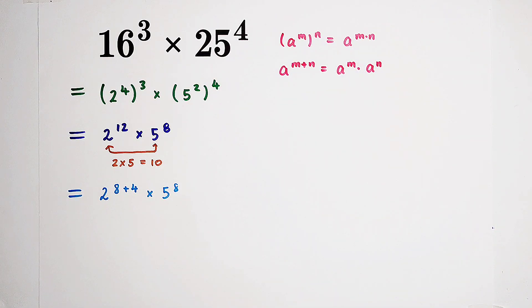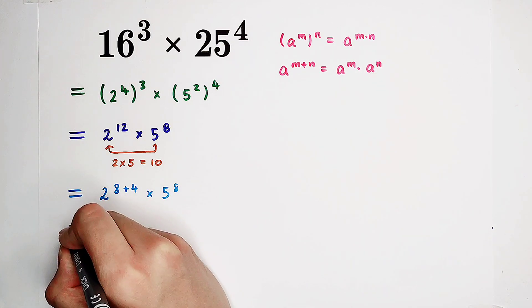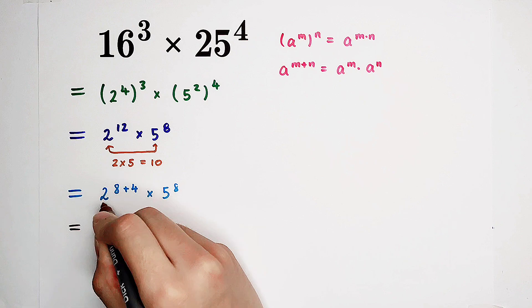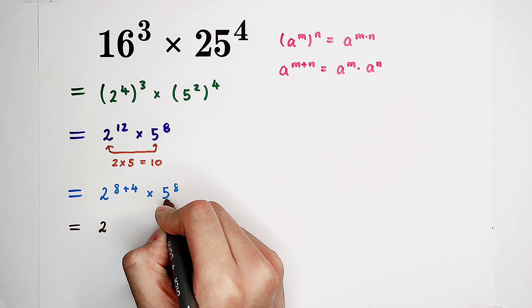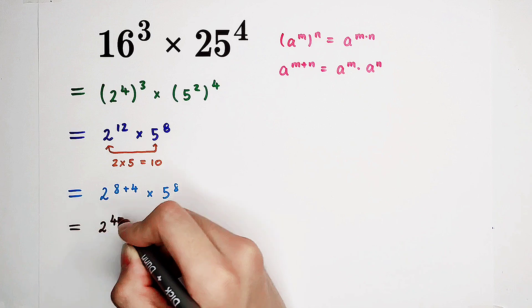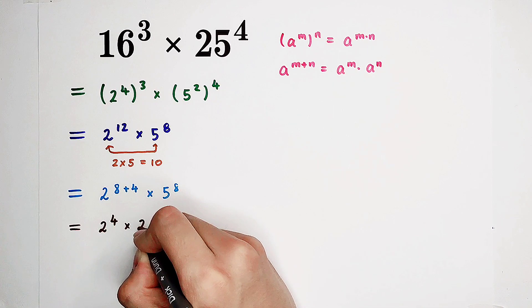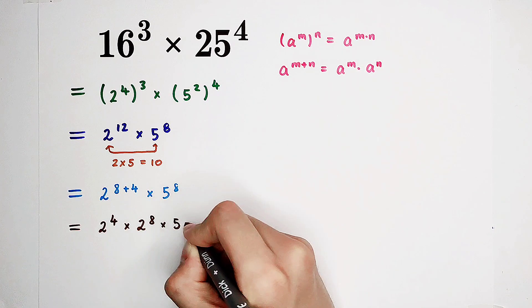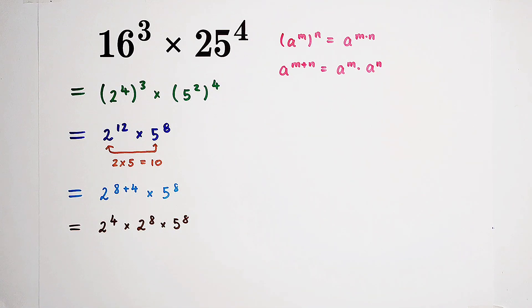So that means 2 to the power of 8 plus 4 is equal to 2 to the power of 4, so we should write 2 to the power of 4 firstly, and then times 2 to the power of 8 times 5 to the power of 8. And this is 10 to the power of 8. a to the power of m times b to the power of m equals a times b, then to the power of m.